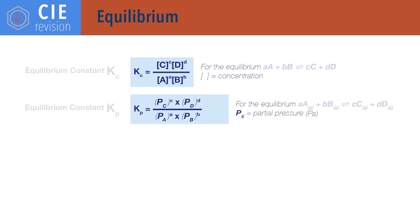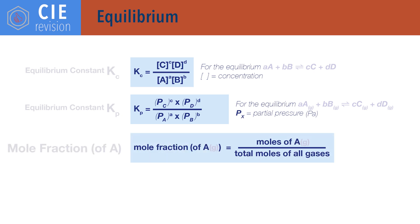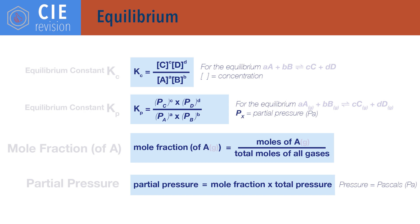Kp equals partial pressures of products times each other divided by partial pressures of reactants times each other, each raised to the power of their molar ratio in the balanced reaction equation. Kp is the equilibrium constant for gases based on partial pressures, with units of pascals. Mole fraction of a gas equals the moles of that gas in the system divided by total moles of all gases in the system. Partial pressure of a gas equals its mole fraction times the total pressure, where pressure is in pascals.